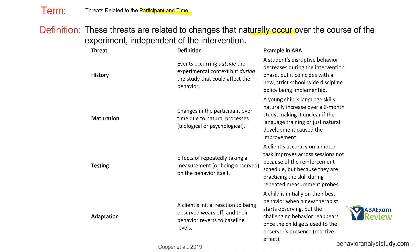For example, history: events occurring outside the experimental context but during the study. Let's say a student's destructive behavior decreases during the intervention phase, which at first glance seems like the intervention or IV changed the behavior. But there is also a school-wide discipline policy being implemented. So we have our independent variable plus this extraneous variable, and due to the history of this setting, we're not quite sure how big of an impact the intervention had versus the discipline policy.